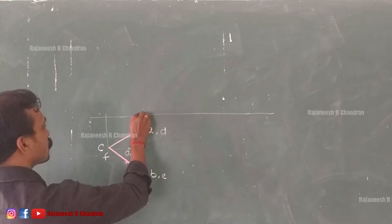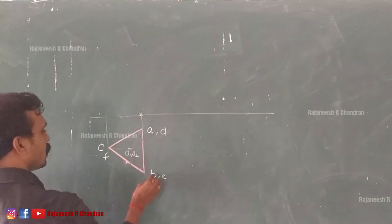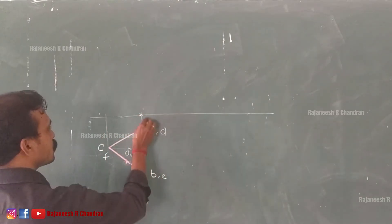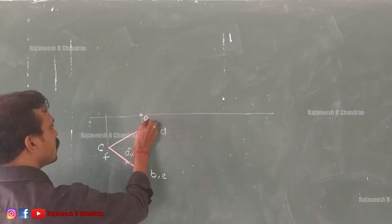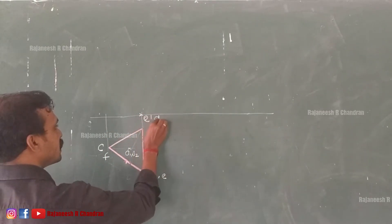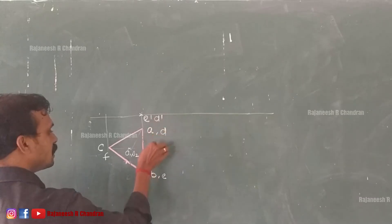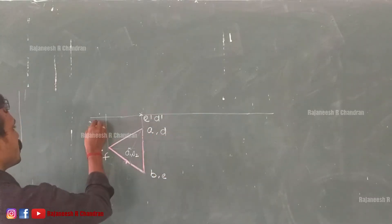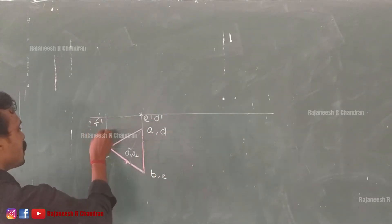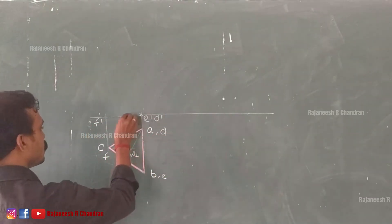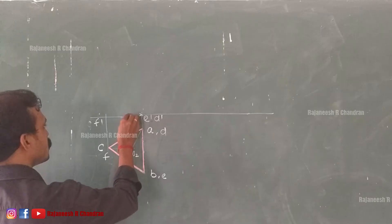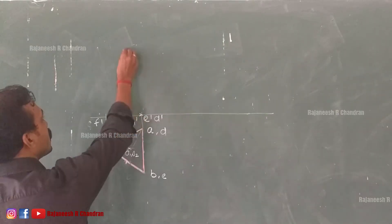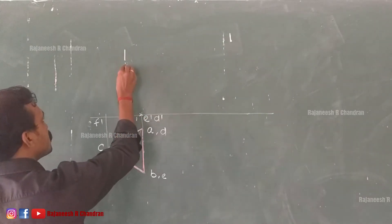Now in the front view, this will be our E dash and D dash, because DEF is the bottom face and this will be E dash projected here. This will be our A dash, B dash and D dash.